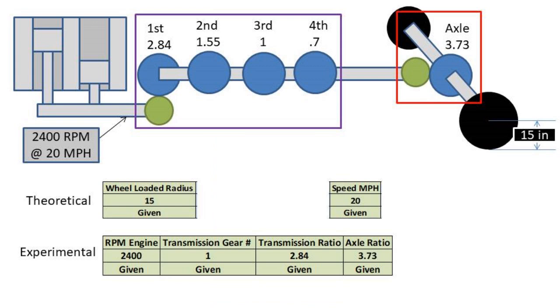We need to find the wheel circumference in miles. This can be done by taking 2π times the wheel radius times the conversion of inches to miles. The next step is to find how many miles per minute the car is traveling.